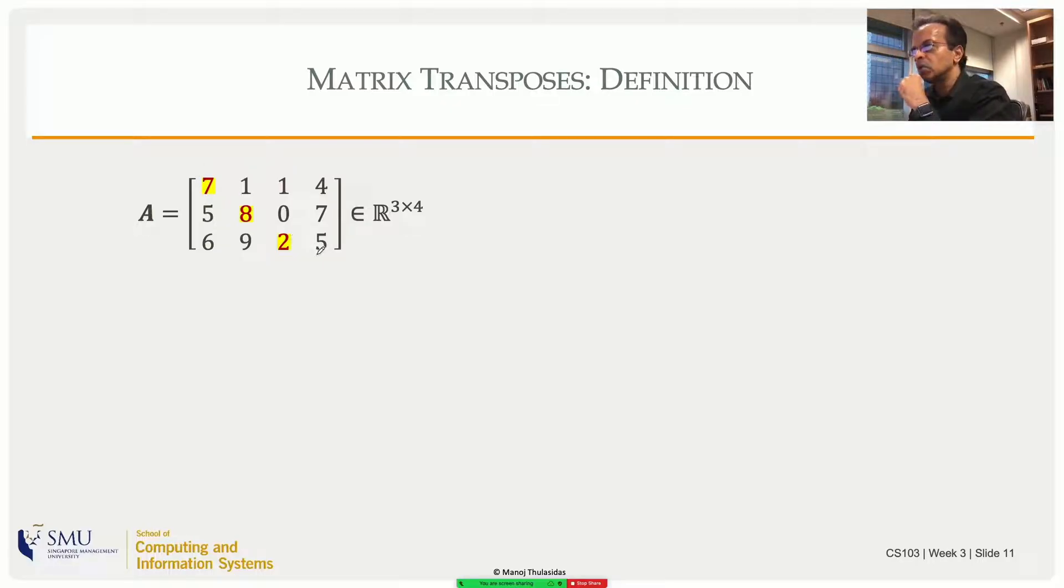The main diagonal doesn't go to the bottom right corner, but it does start at the top left corner. It always starts at 1-1, first row, first column, and then it keeps going down and to the right to the extent possible. It might go and hit the bottom, the floor, or it might go and hit the bracket, the right wall. If it does, then you stop at that point. That is the main diagonal. So it is defined for all matrices, not just square matrices.